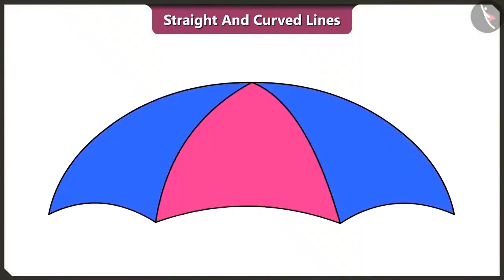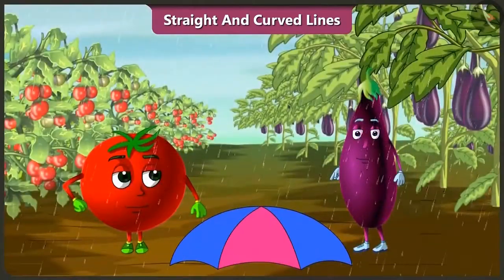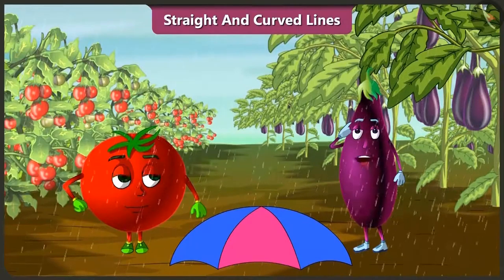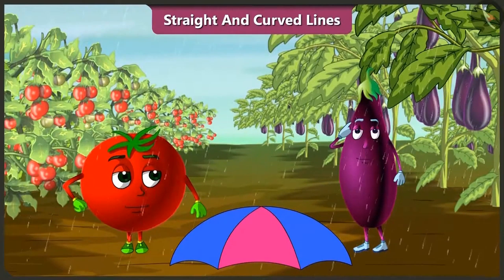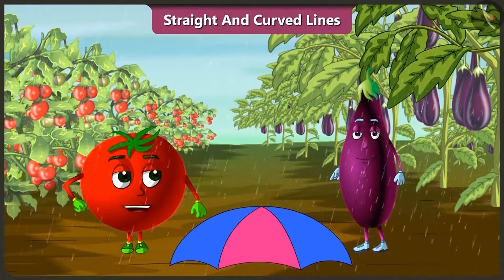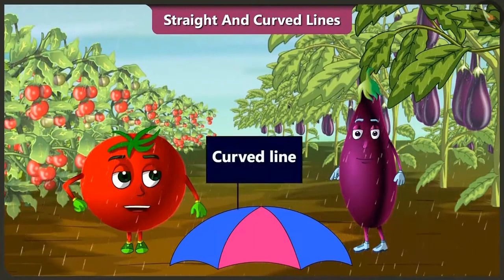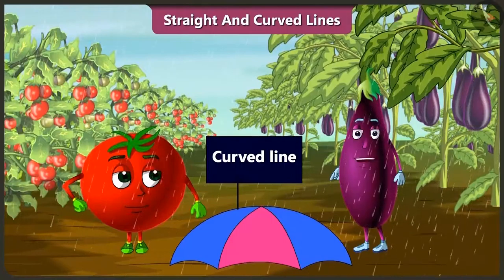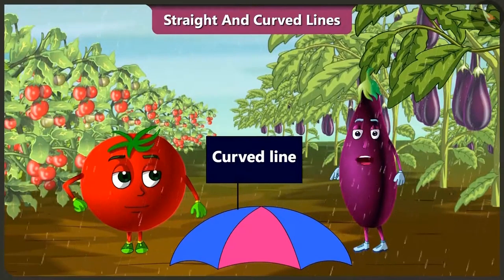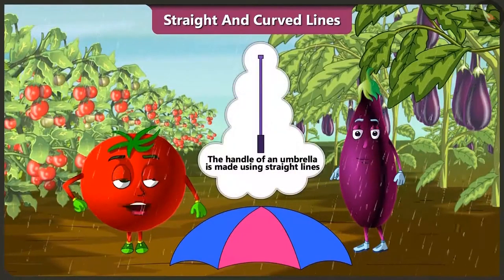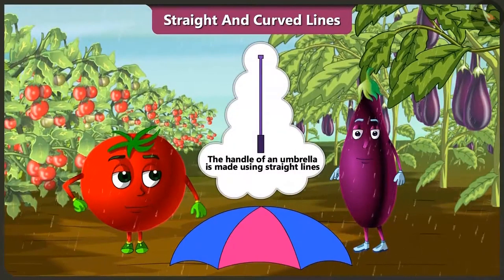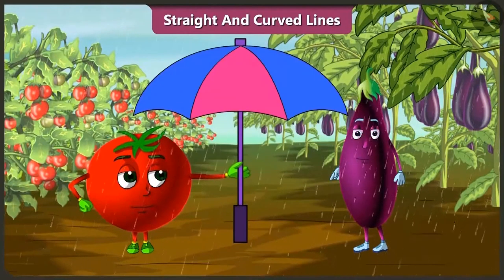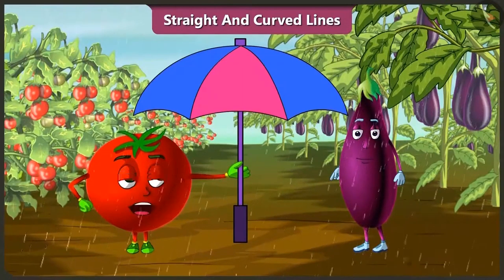The umbrella is made using curved lines. But then they wonder: how will we hold the umbrella? Bingu asks: does an umbrella only have curved lines? Think about it. Yes, there are curved lines — but didn't you notice? The handle of an umbrella is made using a straight line. Yes, you are right — this straight line becomes the handle of the umbrella.